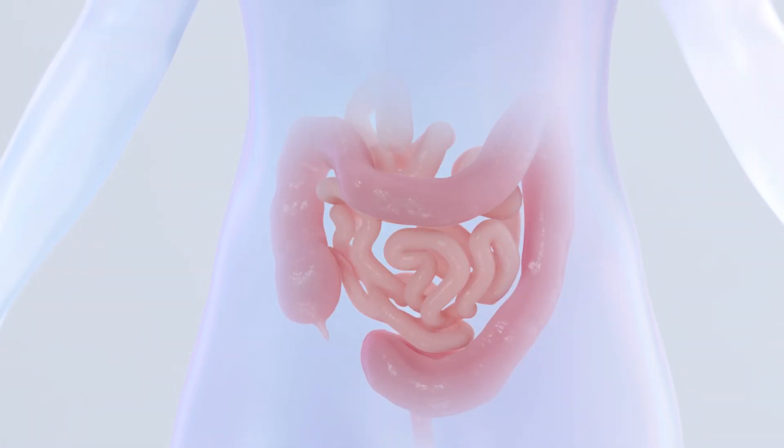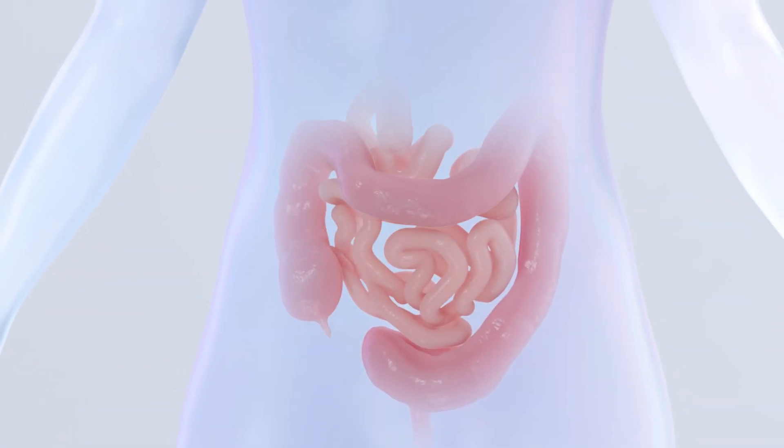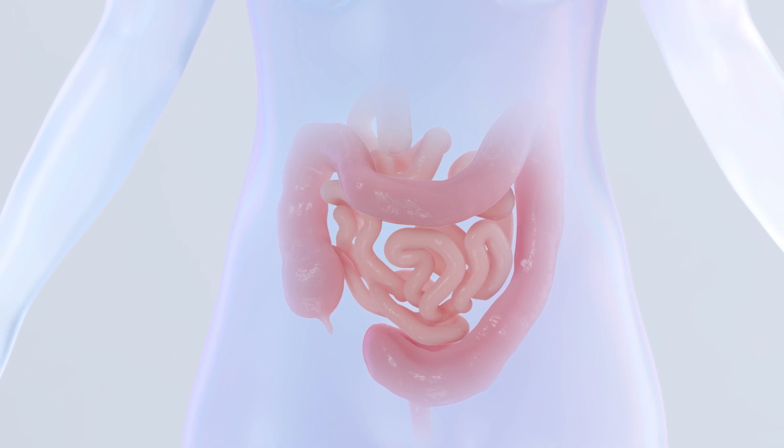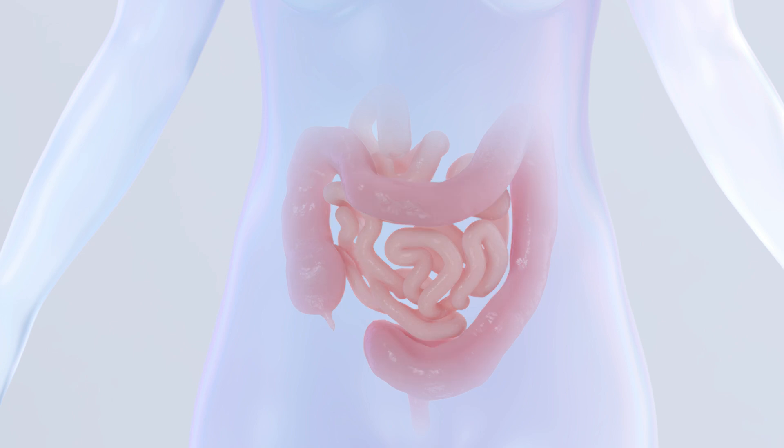In summary, mapping all the cells in the human body is a complex and exciting project that requires multiple technologies and computational methods. By understanding the characteristics and locations of cells, we can better understand how they work together to keep us healthy.